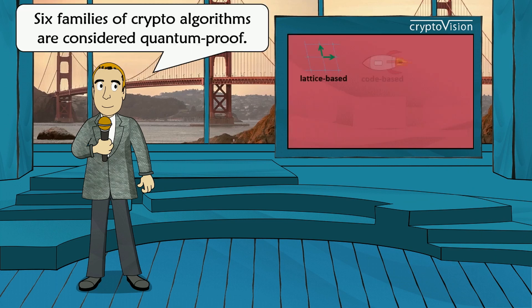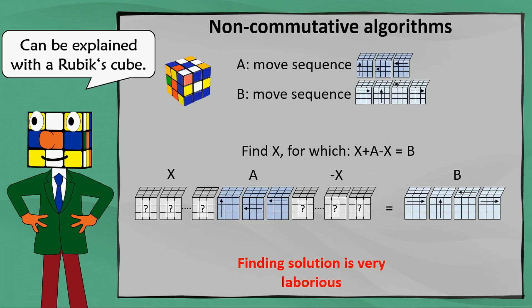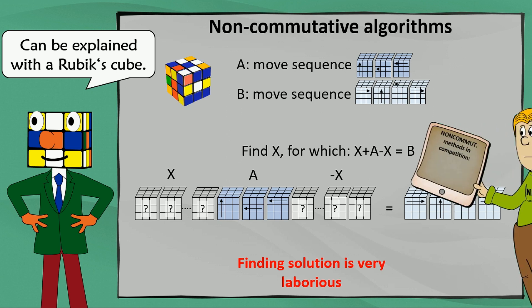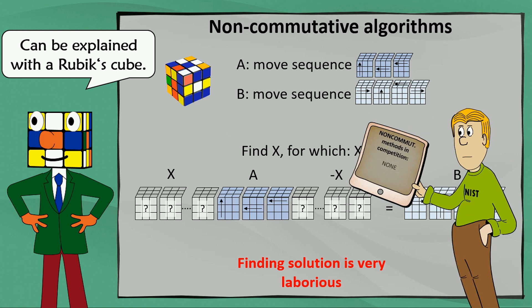We have looked at three of these families of quantum proof algorithms. Let me take a very brief look at the remaining ones. The non-commutative algorithms can be explained with a Rubik's cube — with a Rubik's cube, a Diffie-Hellman key exchange or something similar can be defined. But in the NIST competition there was only one submitted, and it proved insecure. So in the second round, no non-commutative algorithm is in the race anymore, and I'm pretty sure we won't see any of these used in practice in the near future.